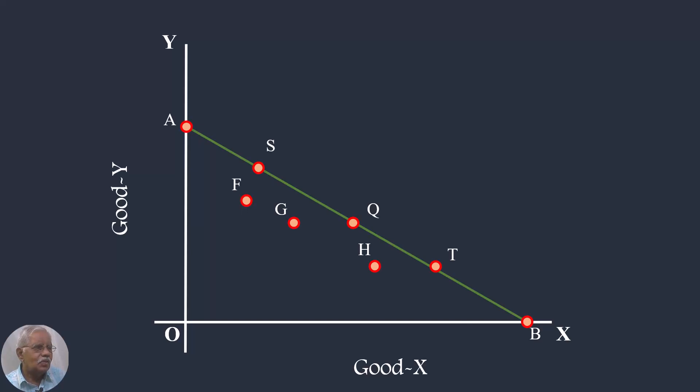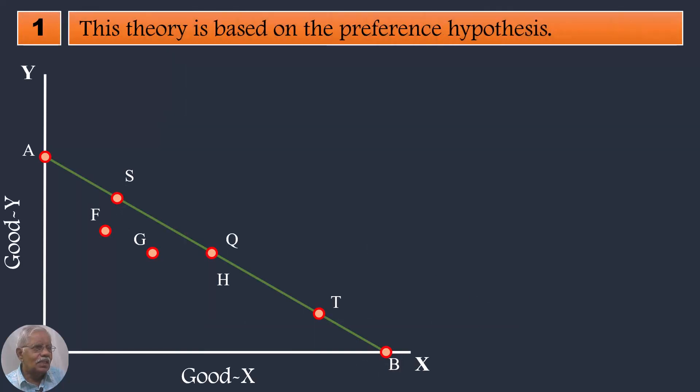Explicit Assumptions 1. This theory is based on the preference hypothesis. According to Samuelson, consumer's choice reveals his preference. It is a single act of choice.